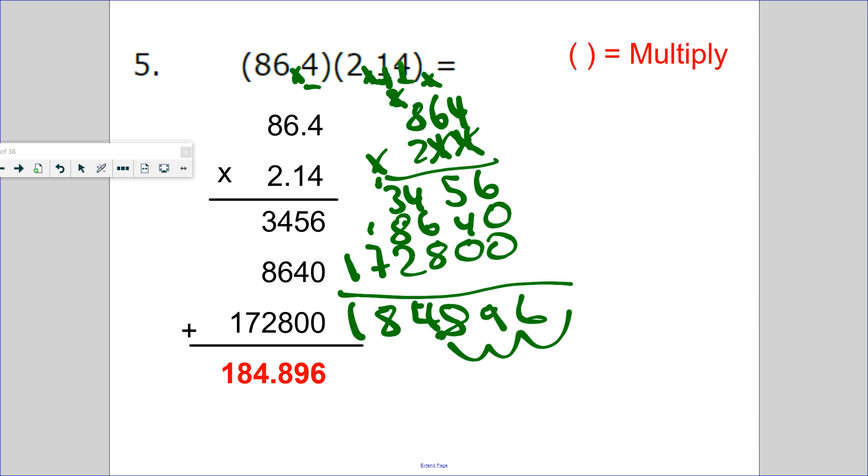Another way you could have done it is estimating. This is close to 90. 90 times 2 is 180. Is this number close to 180? So that's how you could solve sometimes through estimation.